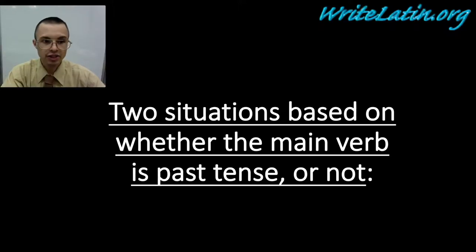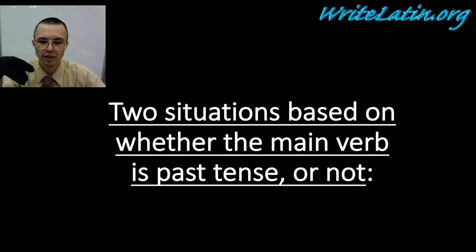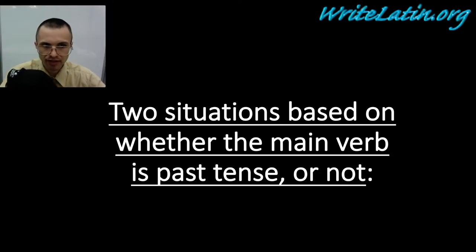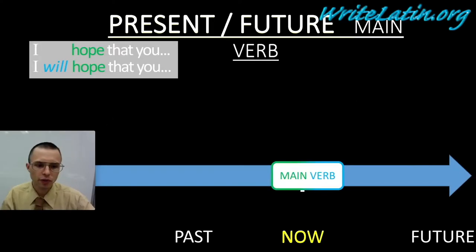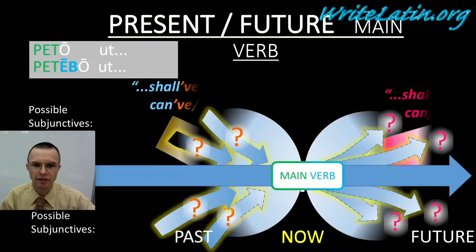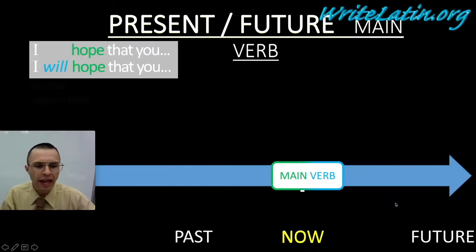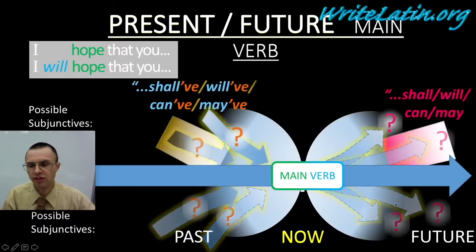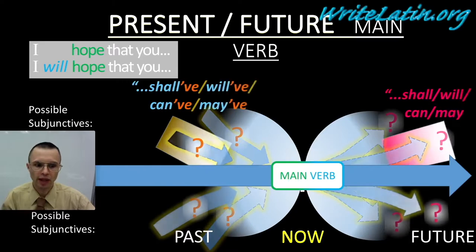In English and Latin, there are two different situations based on whether the main verb in the sentence is past tense or present tense. The first situation is that the main verb is either present or future tense — like 'I hope that you' or 'I will hope that you.' In Latin, this would be petebo ut or petto ut. If that's the case, then the subjunctive verb will be some form of shall, will, can, or may.